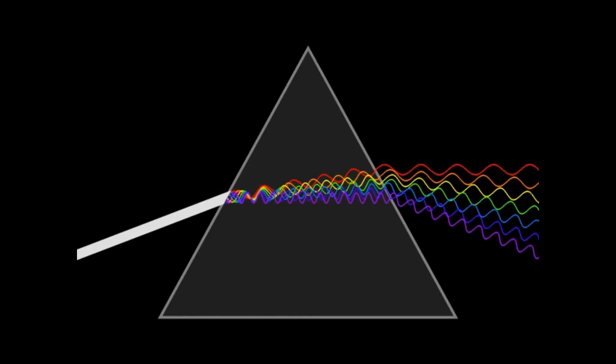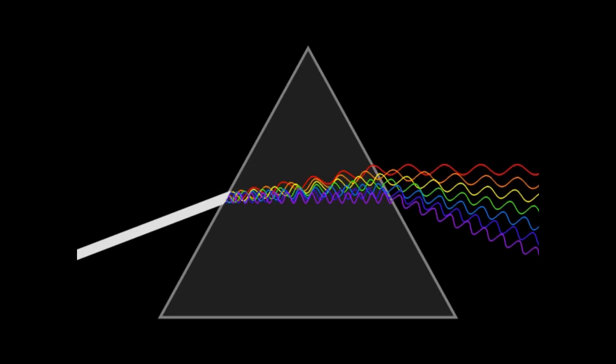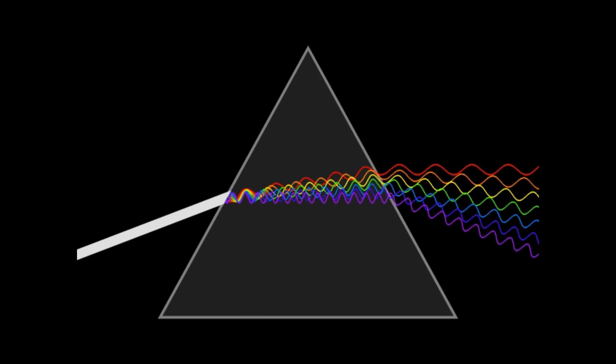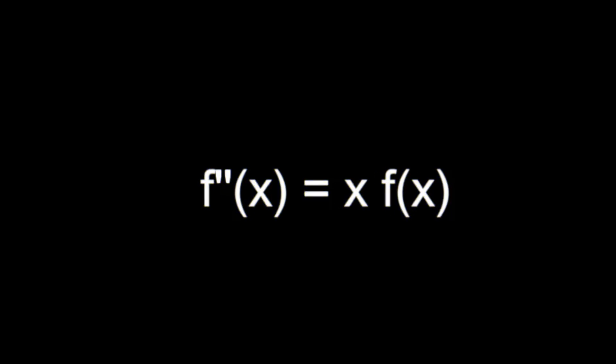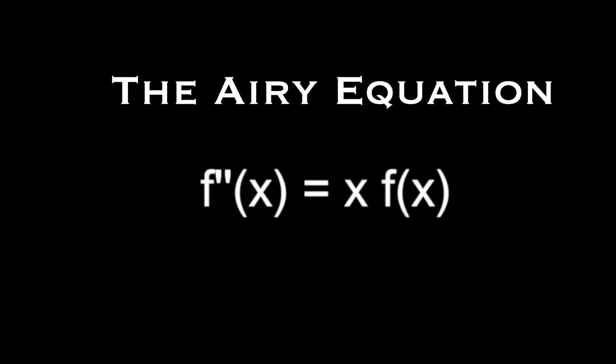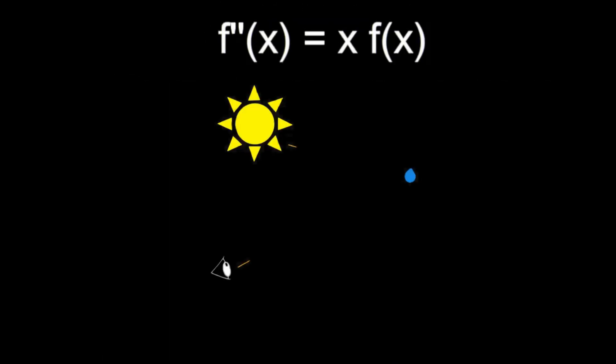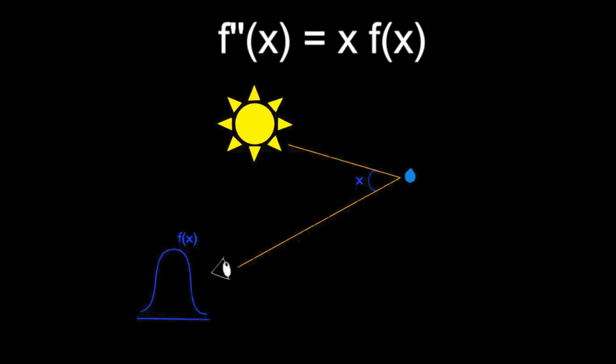Rather than a stationary ray, light travels in space more like a wave on the surface of the water. These ideas led him to what is today a very famous differential equation, and it now bears his name — it's called the Airy equation. In it, x represents, roughly speaking, the angle between the sun and your eyes formed as a water droplet suspended in the air, and f of x represents the light intensity when this angle is x.